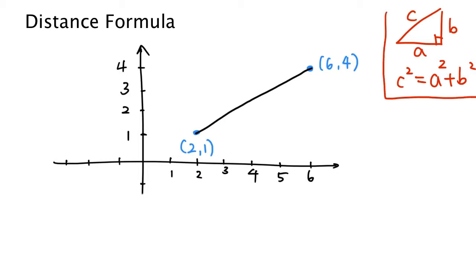So if you apply the Pythagorean theorem, we can find the length of the longest side using the two other sides of the triangle. We're going to use this idea here. So we're going to draw a right triangle. Here is the right triangle, and the distance between the two points is the longest side of the triangle. Let's call it D — D for distance.